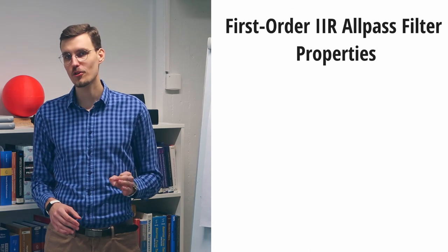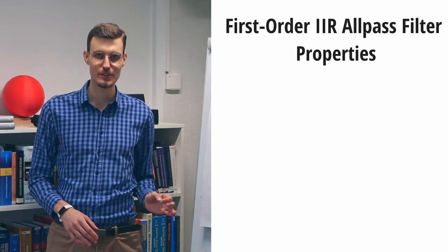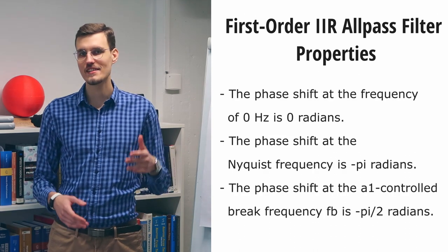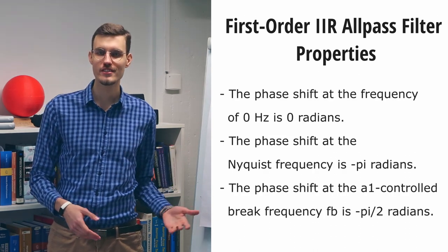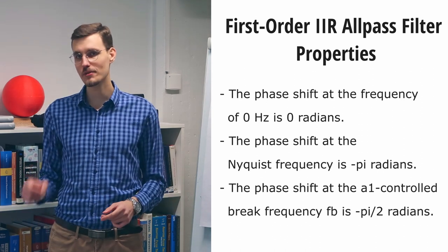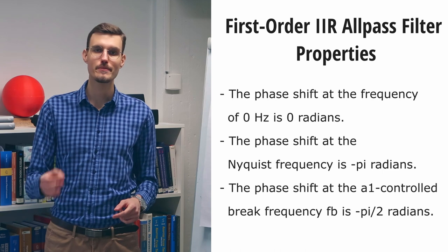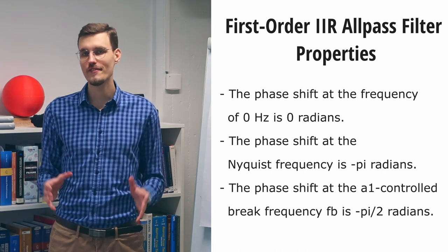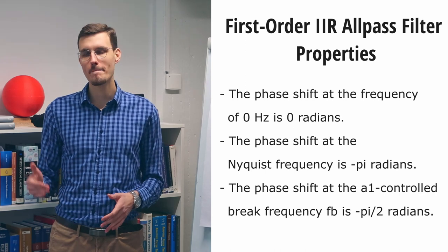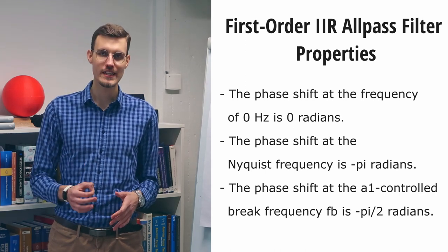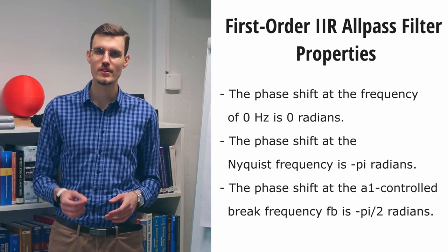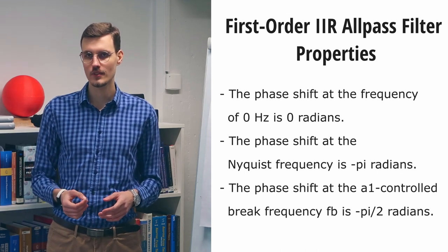To recap, the first-order IIR ALLPASS filter has the following properties. The phase shift at the frequency of 0 Hz is 0 radians. The phase shift at the Nyquist frequency is minus pi radians. And the phase shift at the break frequency is exactly minus pi over 2 radians. And this break frequency can be controlled with the A1 coefficient.